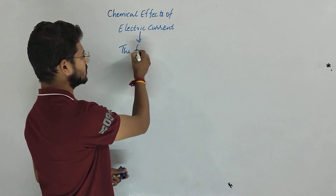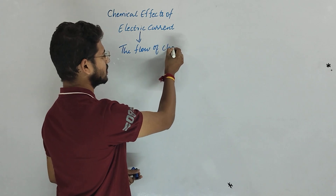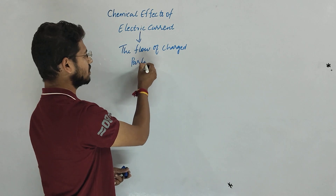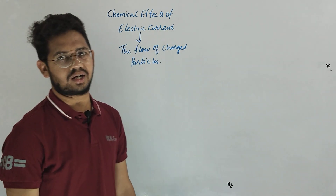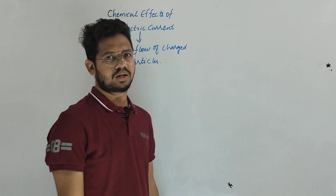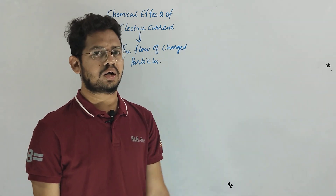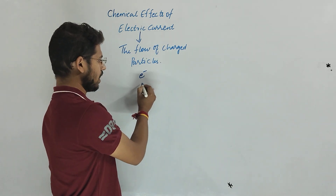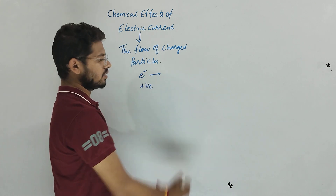We all know that electric current is the flow of charged particles. The flow of charged particles through a substance is called electric current. We already know that there are a number of charged particles that make current move in a substance — those may be electrons or positively charged particles.